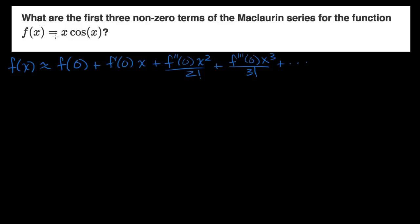What you're immediately going to find is, when you start taking the derivative of f — the second, third, fourth, and fifth derivative — you're actually going to have to take a bunch of derivatives. Every time you'll have to apply the product rule, so this is going to get very hairy very fast. There's actually a trick to this problem.